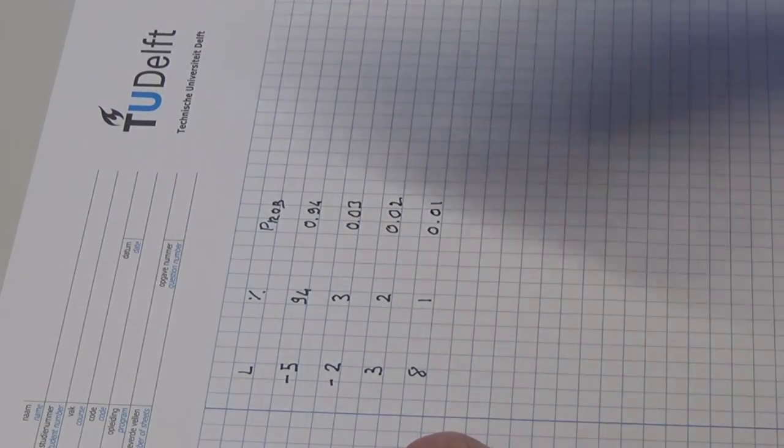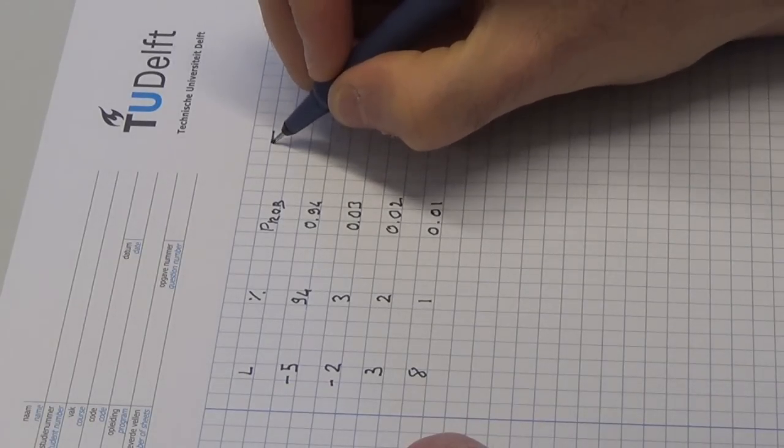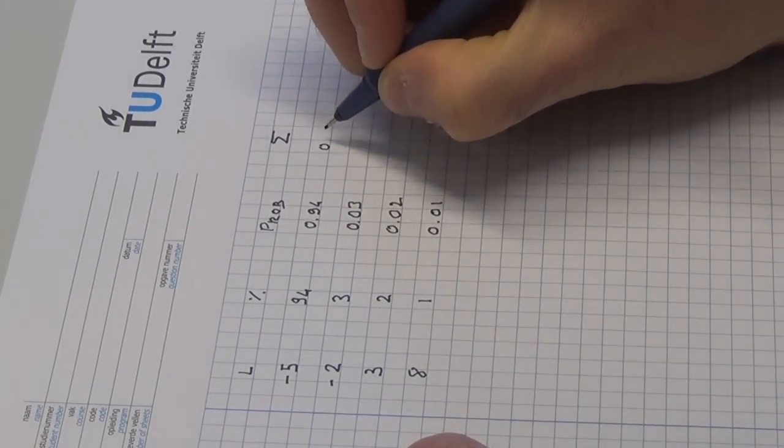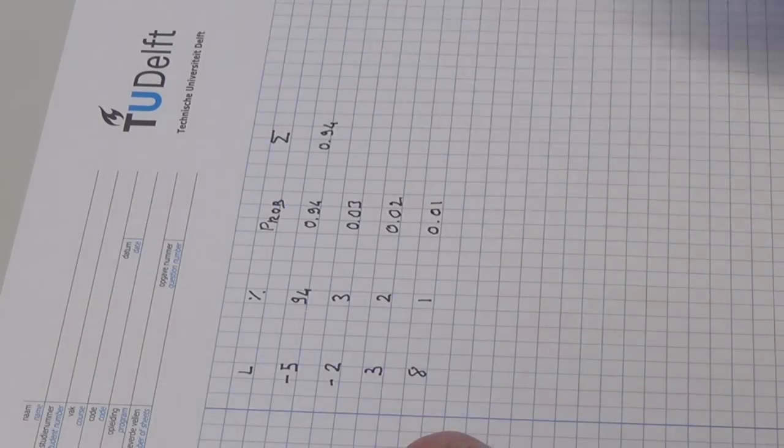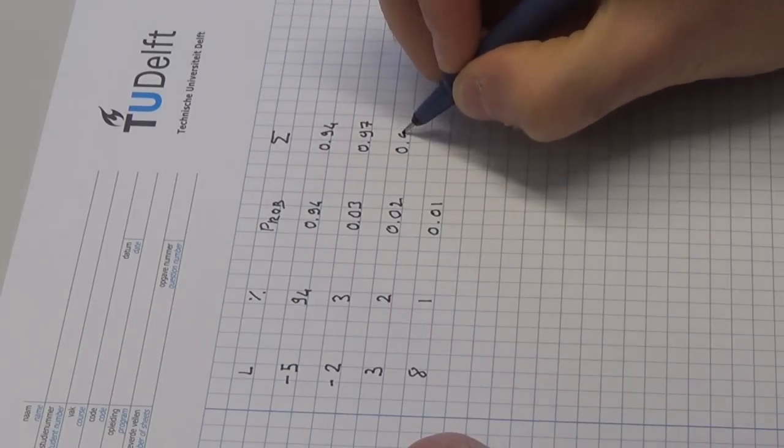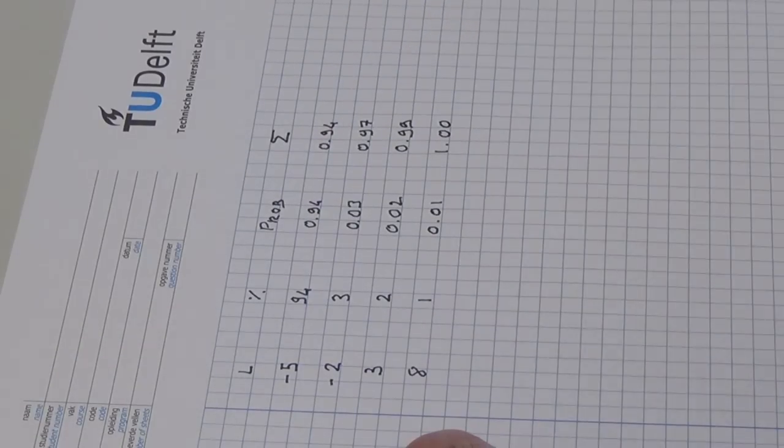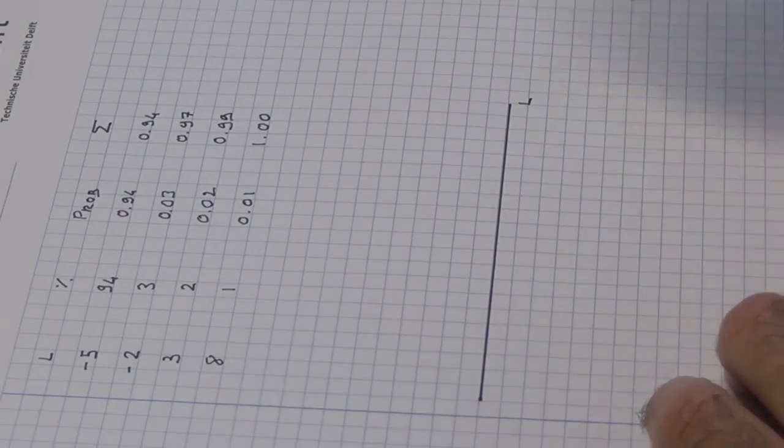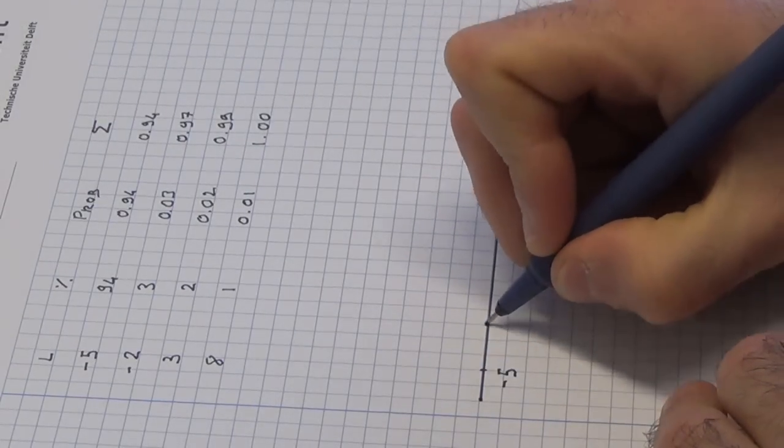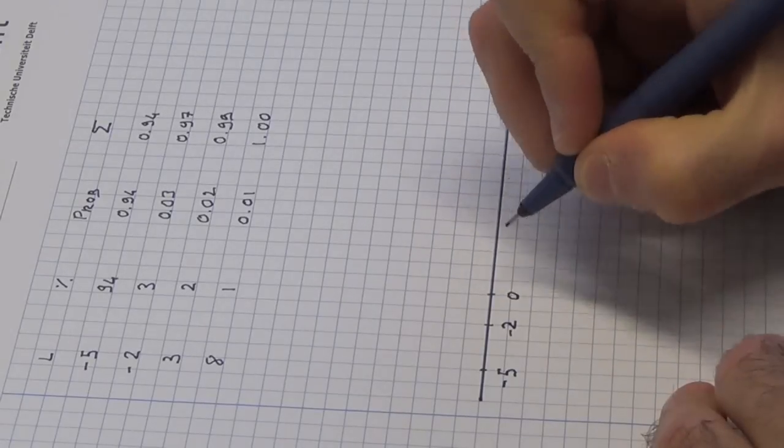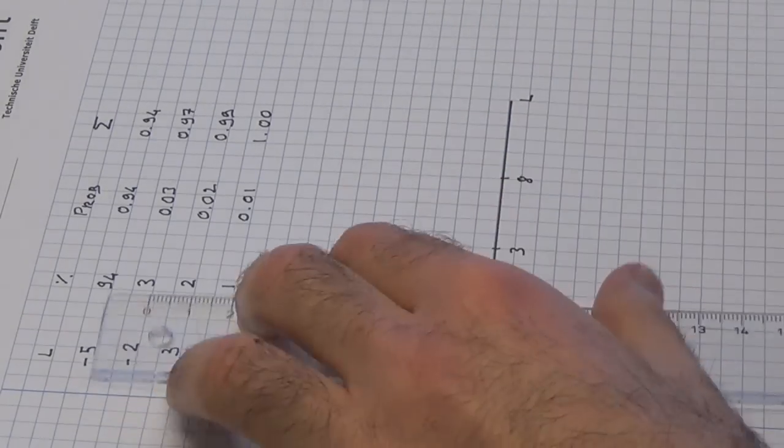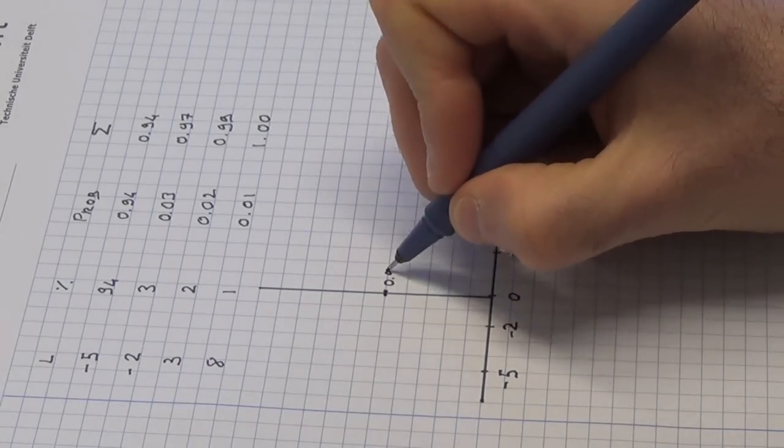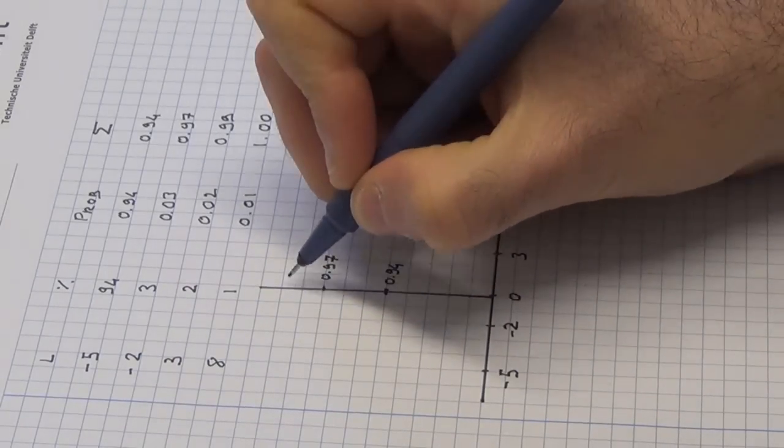We then add a fourth column containing the cumulative probabilities as decimals: 0.94, 0.97, 0.99, and 1. Thanks to this table, we can now draw the empirical cumulative distribution function of losses. On the x-axis we put losses, on the y-axis the cumulative probabilities. For reasons of space, the scale of the y-axis is not really representative here.